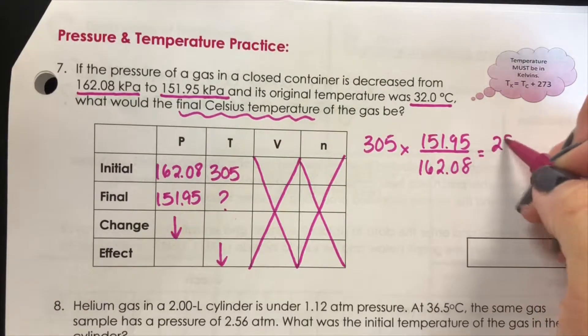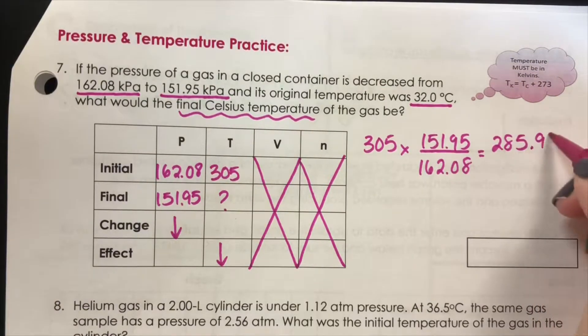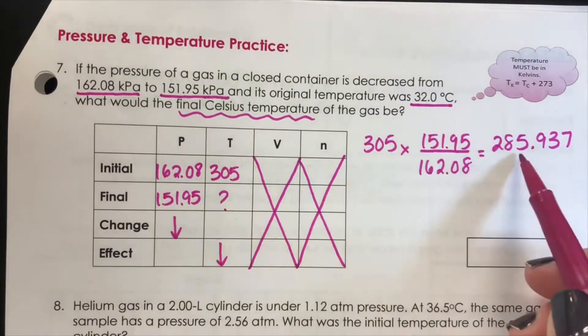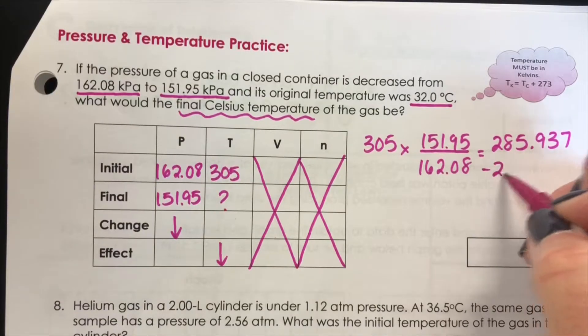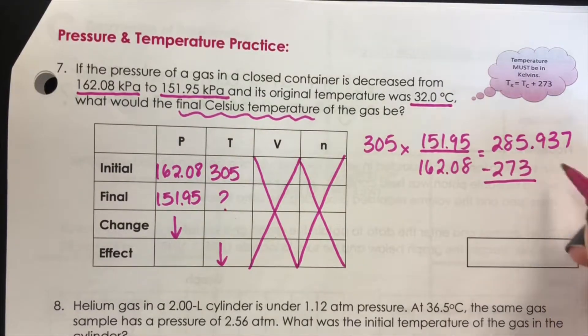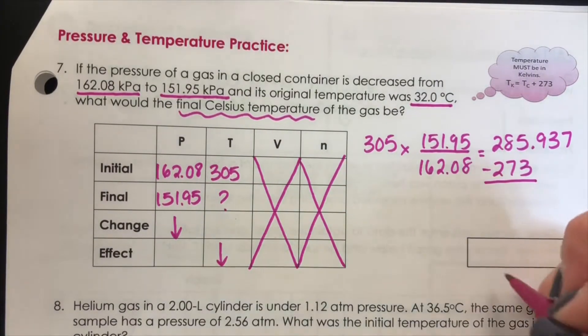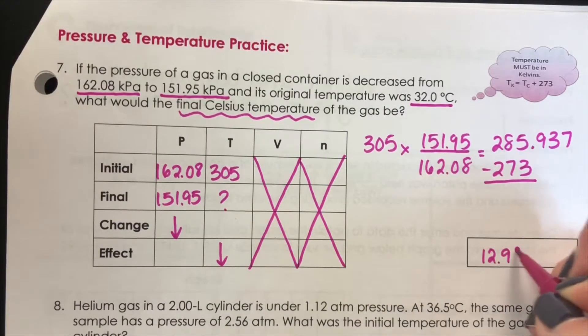When we calculate this it's 285.937 so we did get the decrease that we were looking for and to get our answer back to Celsius we're going to subtract 273. Rounding for significant figures it will be 12.9 degrees Celsius.